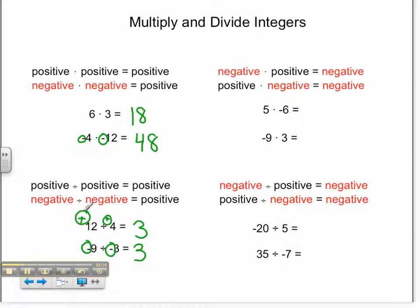Let's go to multiplying and dividing with different signs. Here we have 5 times negative 6. I know 5 times 6 is 30, and since the signs are different — the 5 is positive and the 6 is negative — my answer is going to be negative 30. For negative 9 times 3, I know that 9 times 3 is 27, and the negative sign makes it negative 27, because it's negative 9 and positive 3, so the signs are different.